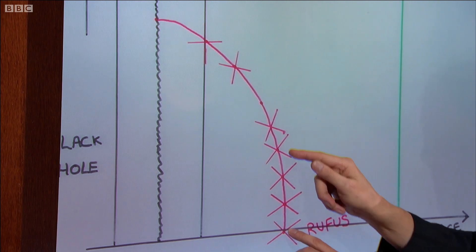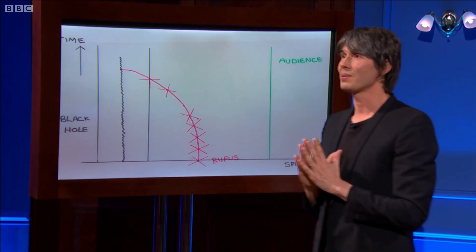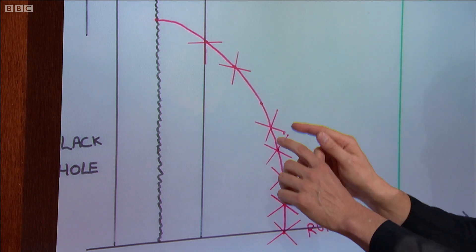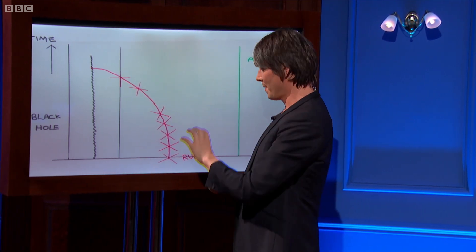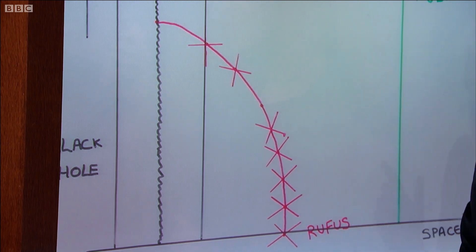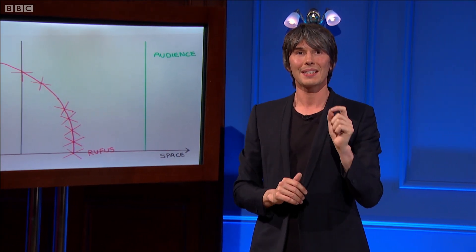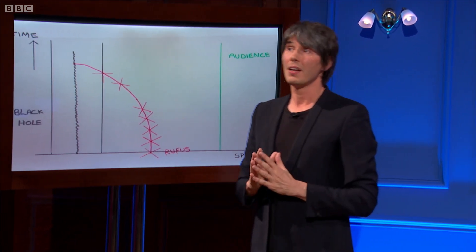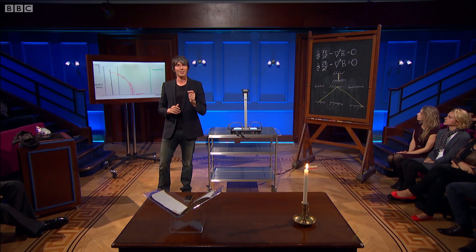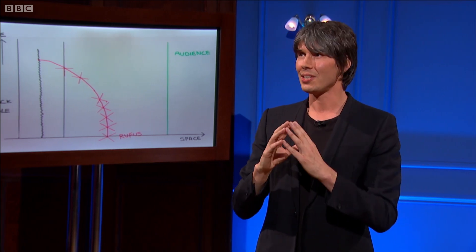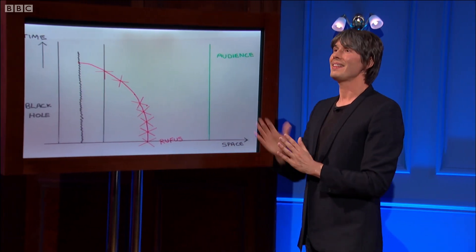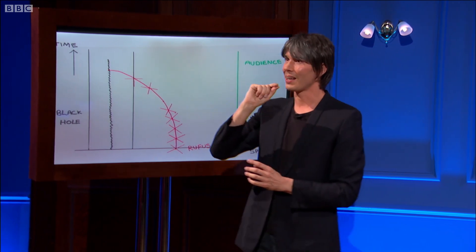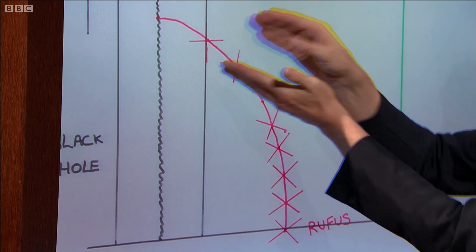I've also drawn Rufus's light cones at various points along his world line. These mark out Rufus's accessible future. Look what happens to these light cones as he approaches the event horizon — they're tilting. According to Albert Einstein, this tilt is caused by the mass of the black hole itself. It's a representation of a central idea in Einstein's theory of gravity, general relativity: mass and energy curve space and time, the very fabric of the universe itself. That curvature — the warping of space and time — is what we're seeing in this diagram as the tilting of light cones, the tilting of Rufus's future towards the event horizon.